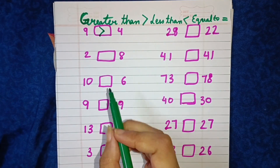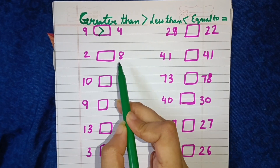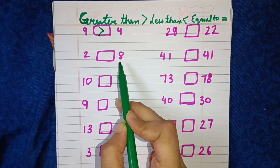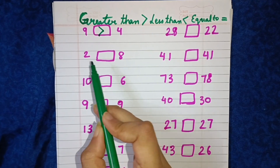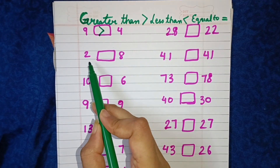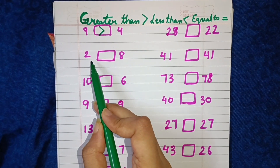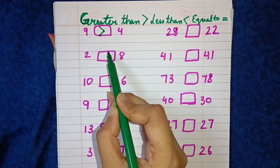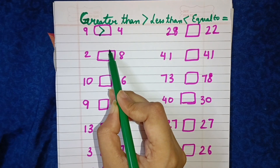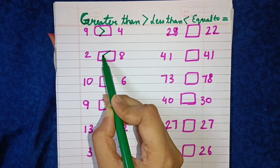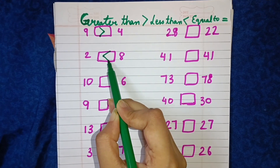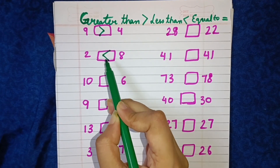Next, 2 and 8. We all know that 2 is smaller than 8, so we will put here the less than sign. 2 is less than 8.